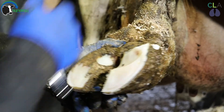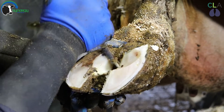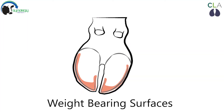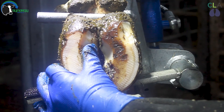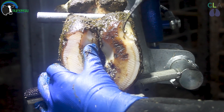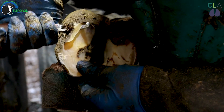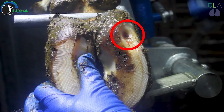A correct trim during trimming can relieve the pressure as the solar horn weakens and starts to separate. Often stones can get caught in this separation, making it worse. Severe cases can result in a white line abscess.